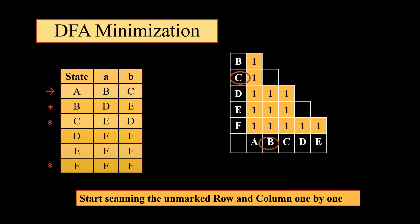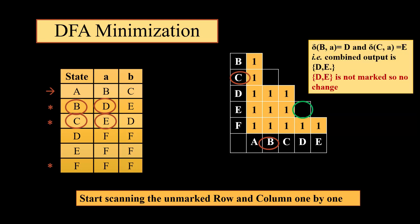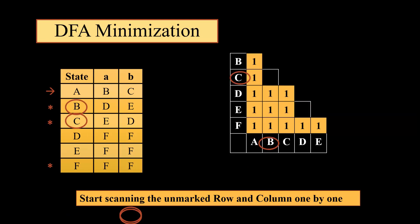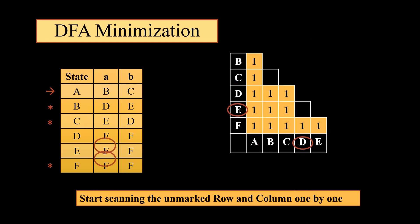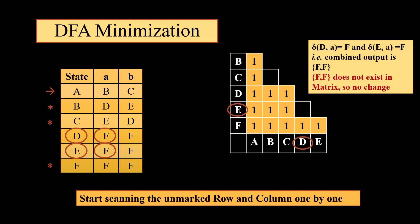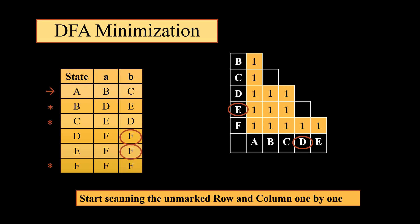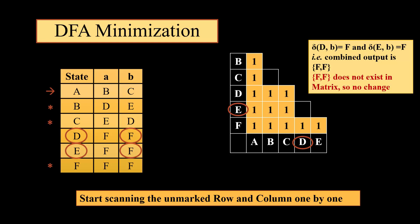Now we move to the third iteration. We check BC. BC on A gives us DE, which is unmarked. BC on B gives us ED, which is again unmarked, so BC will remain unmarked. Next we move to DE. DE on A gives us FF, which does not exist in the matrix. DE on B also gives us FF, which does not exist in the matrix. So we can say that we can combine BC and DE.